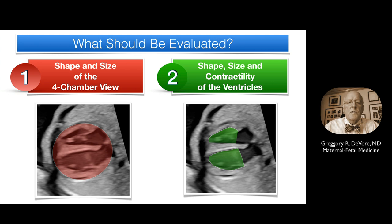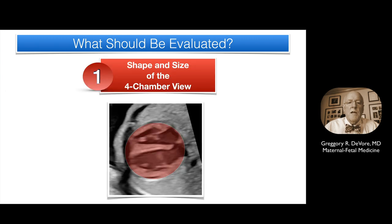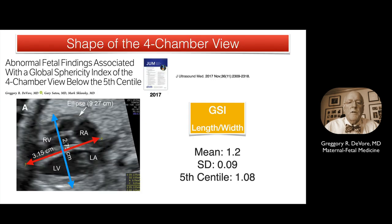The measurements of the heart that would be important to consider include first the shape and size of the four-chamber view, followed by the shape, size, and contractility of the ventricles. The shape of the four-chamber view can be computed by identifying the end-diastolic frame. Two measurements are made: the basal-apical length in red, and the transverse width in blue. The term used to describe this shape is the Global Sphericity Index, or GSI, computed by dividing the length by the width. The mean value is 1.2 with a standard deviation of 0.09. The fifth centile is 1.08, and any value less than 1.08 is considered a round or globular-shaped heart.